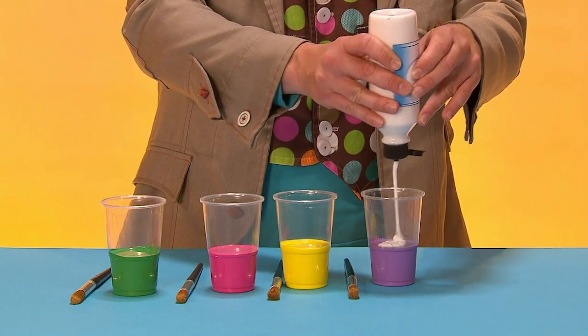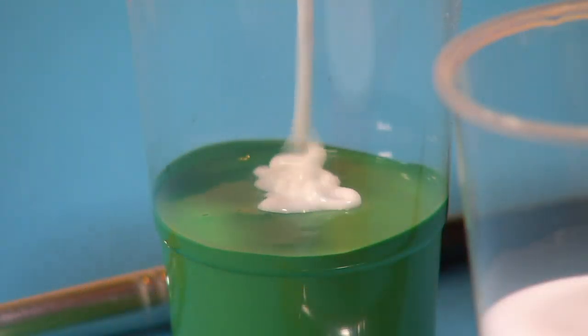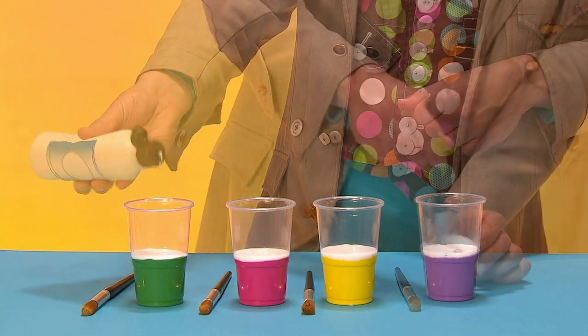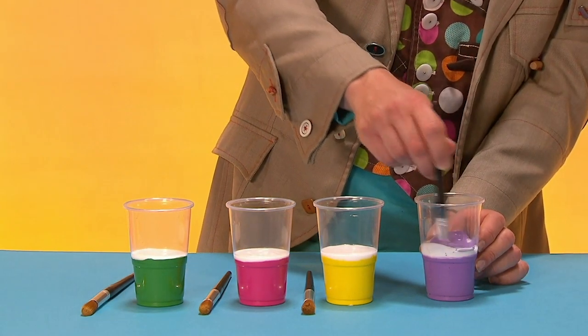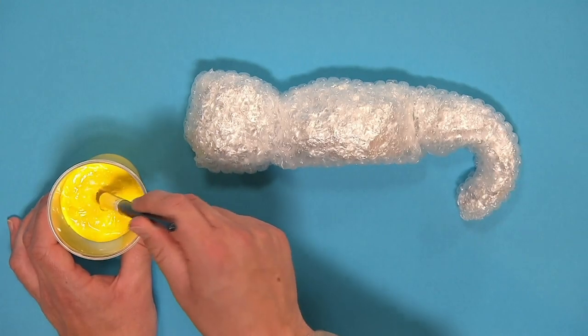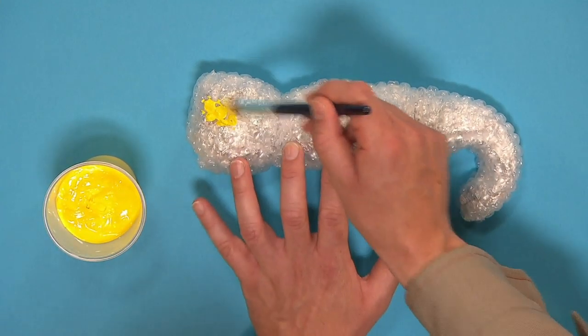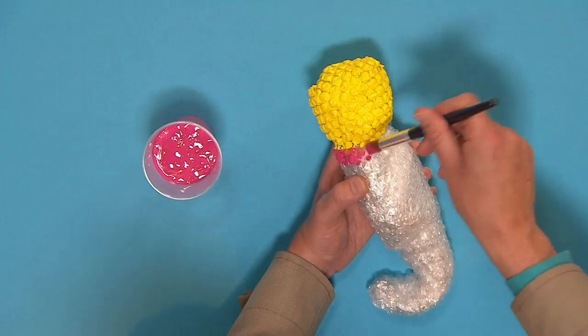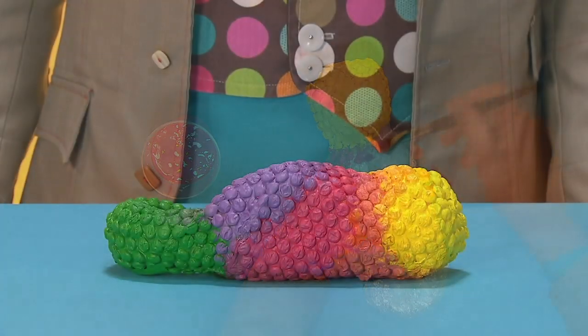Add a squirt of gloopy PVA glue to each of your paint colours. And give them a stir. Then paint your chameleon in different colours and leave it to dry.